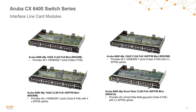Taking a look at the interface line cards — these are our access interface line cards, all PoE line cards. On the upper row are the Class 4 PoE modules: a 48-port 1 gig Class 4 PoE module on the upper left, and on the upper right a 48-port 1 gig Class 4 PoE module with four uplinks leverageable at 10 gig, 25 gig, or 50 gig. On the bottom row are the Class 6 PoE line cards: on the lower left a 48-port 1 gig Class 6 PoE module with four SFP56 uplinks, and on the lower right a Class 6 Smart Rate PoE module supporting 1 gig, 2.5 gig, and 5 gig interfaces.